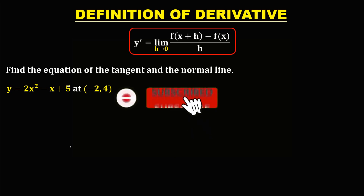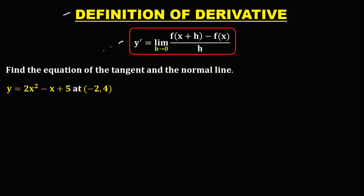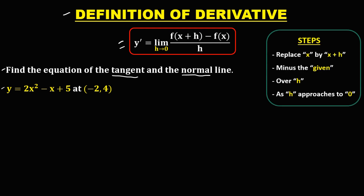Let's have this problem. So for the definition of derivative, this is the formula, and we have this given. Find the equation of the tangent and the normal line. From this given, first we need to find the derivative using this formula, and these are the steps.